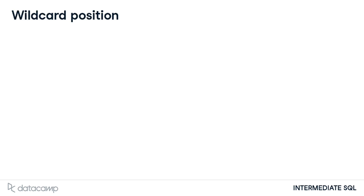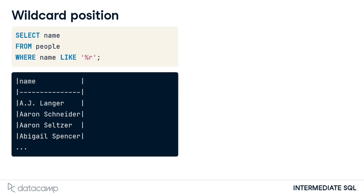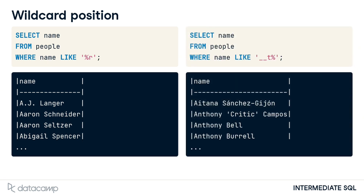We've reviewed one example of where to position each wildcard, but we can actually put them anywhere and combine them. We can find values that start, end, or contain characters in any position, as well as find records of a certain length. For example, the code on the left will find all people whose name ends in R. The code on the right will find records where the third character is T.